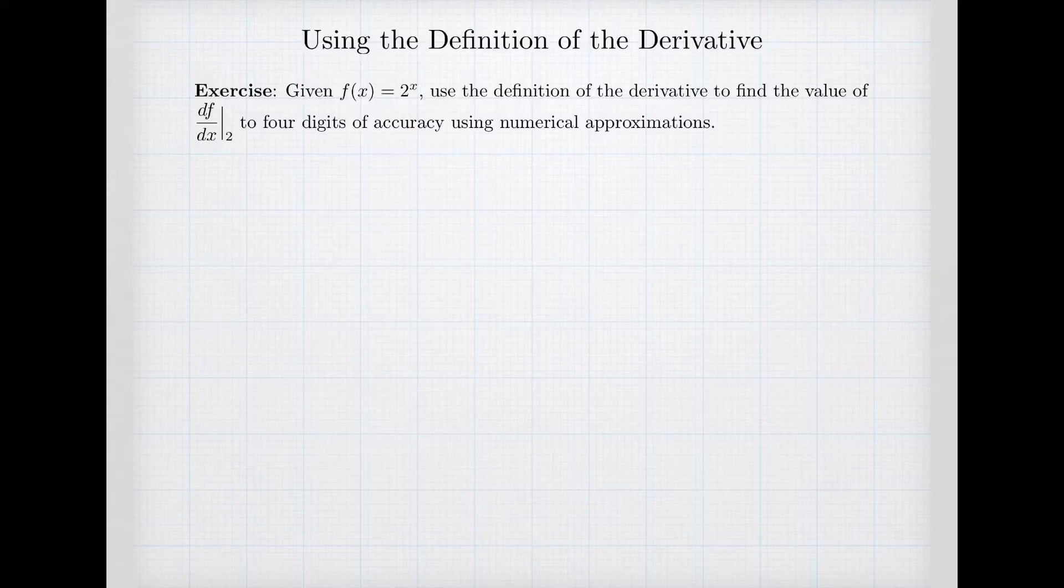The way that we're going to do this is we need to start by remembering the definition of the derivative. The definition of the derivative says that if I want to calculate the slope of a function at a particular value of a, I'm going to calculate the slope between the value f(a) and the value f(a+h), where h is some distance between the two x values. And then I need to take a limit as h goes to 0.